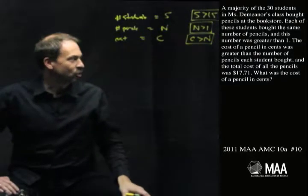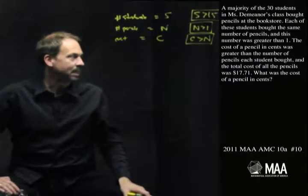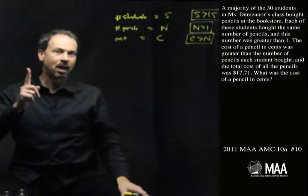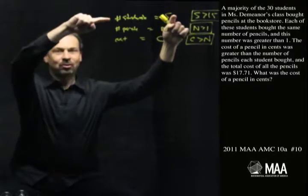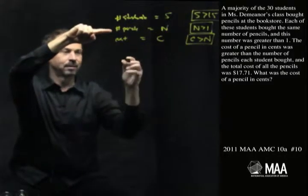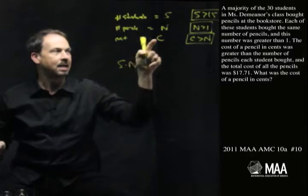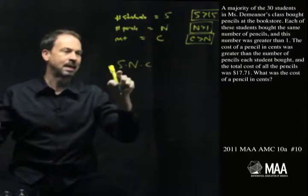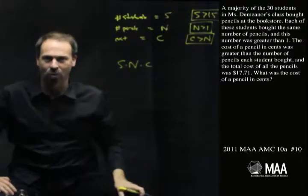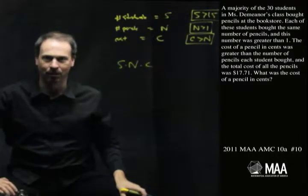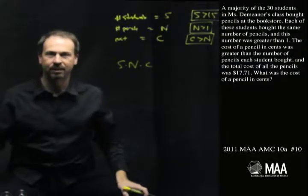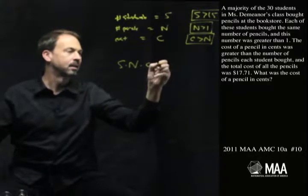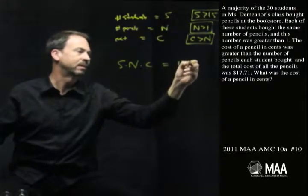Alright, and the total cost of the pencils was $17.71. Total cost, do I have that? Well, I kind of do. We have S students each buying N pencils, so the total number of pencils bought is S times N. And each pencil costs C cents, so there's that many pencils each costing C, so I guess the product, S times N times C, is the total cost of all the pencils that were bought. And we're told this is $17.71. Well, the whole question is arranged in terms of cents, so that answer in terms of cents, that's 1,771 cents.